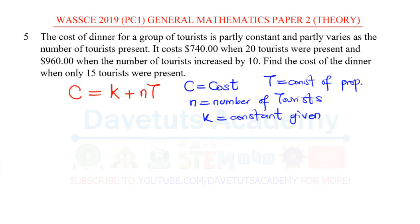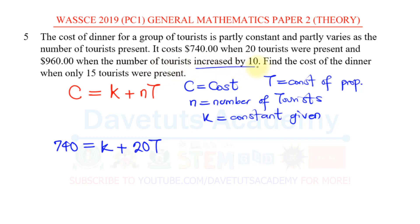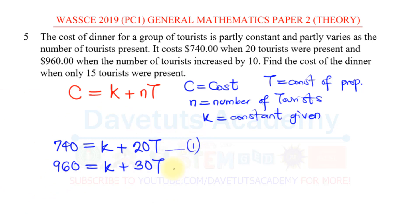Looking at these parameters, in the first scenario we are told it costs $740 when 20 tourists were present. So we can say: 740 = K + 20T. That is equation 1. In the second scenario, it costs $960 when the number of tourists increased by 10, meaning 20 plus 10 equals 30 tourists. So: 960 = K + 30T. That is equation 2.